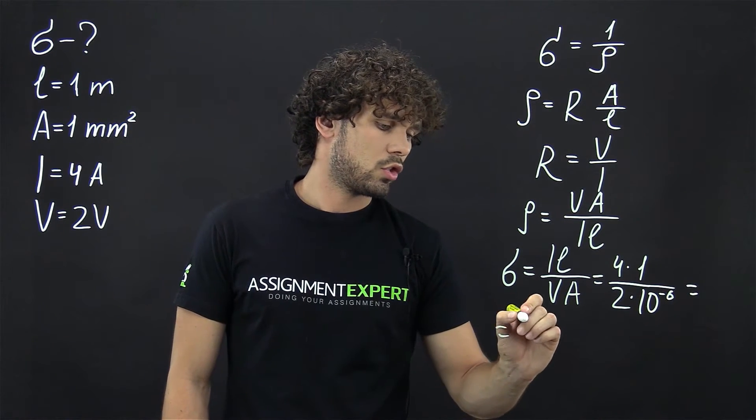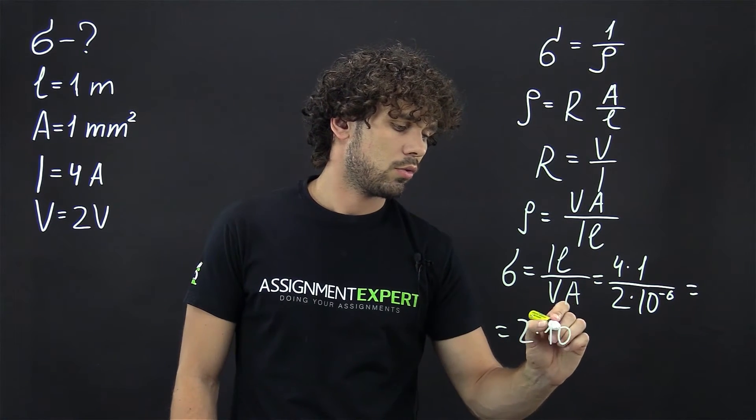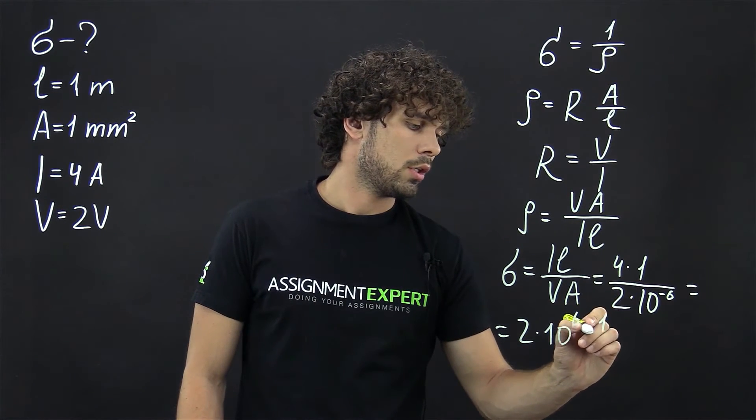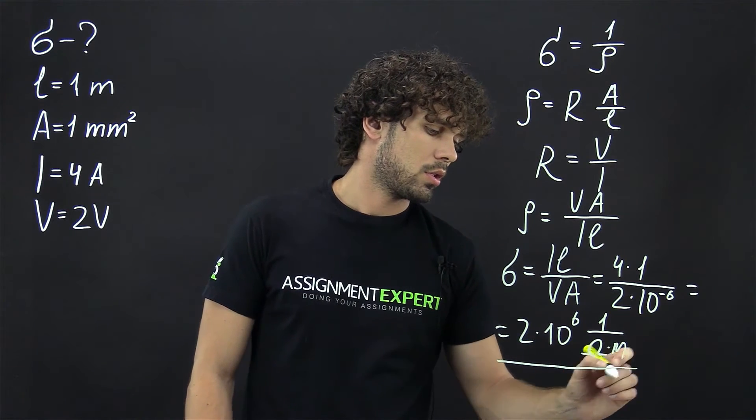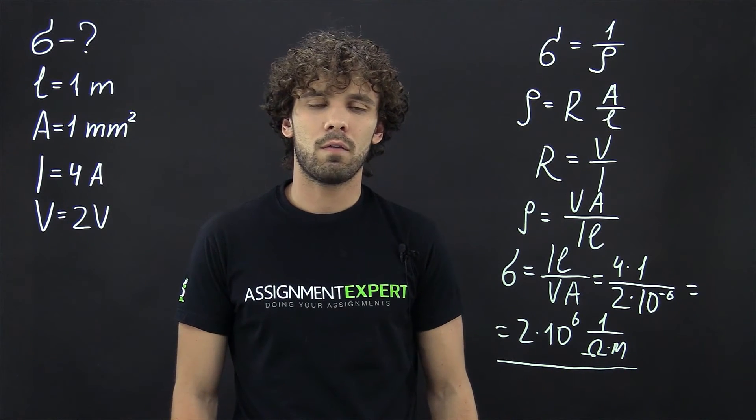And this gives us 2 times 10 raised to the 6 power, and the units are 1 over ohm times meter. So here it is, the conductivity of our nichrome wire.